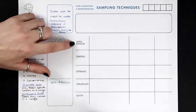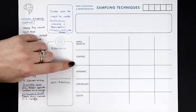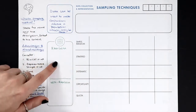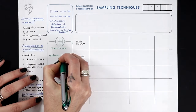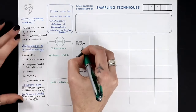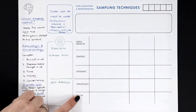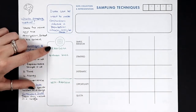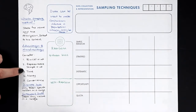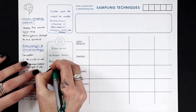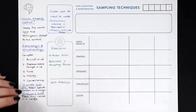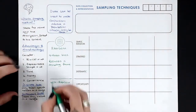We've got three random techniques: simple random sampling, stratified sampling (which uses simple random sampling within it), and systematic sampling. The advantage of all three is that they reduce bias. However, all three require a sampling frame — a numerical list of everybody in the population — which can be time-consuming and expensive.